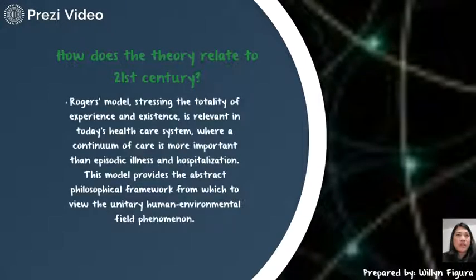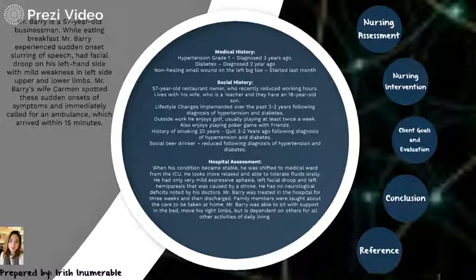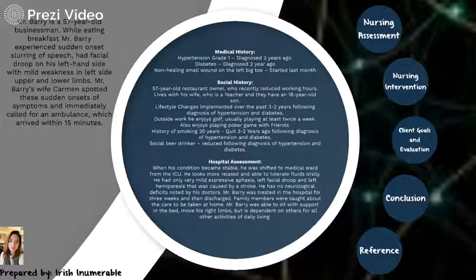Our group created a case scenario with the application of the science of unitary human beings theory. Mr. Barry is a 57-year-old businessman. While eating breakfast, Mr. Barry experienced sudden onset slurring of speech, had facial droop on the left side, with mild weakness in the left upper and lower limbs.